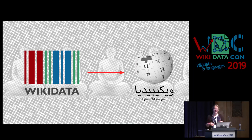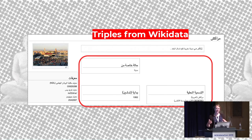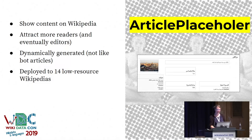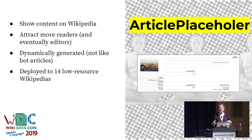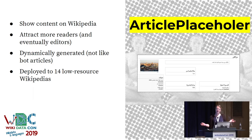So now we have all this language data in Wikidata with low-resource Wikipedias, and we thought: what can we do? My undergrad supervisor and I worked on something called the article placeholder, which takes triples from Wikidata and displays them on Wikipedia. You take the content of Wikidata, display it on Wikipedia to attract more readers, and then eventually more editors in different low-resource languages. They're dynamically generated, so they're not like stubs or bot articles that flood Wikipedia. It's basically a starting point. The article placeholders are live on 14 low-resource Wikipedias.